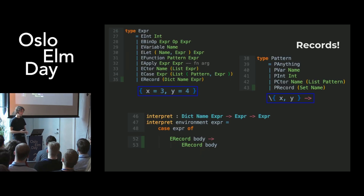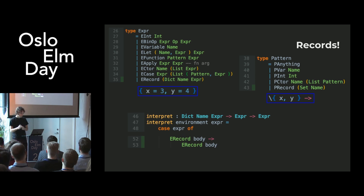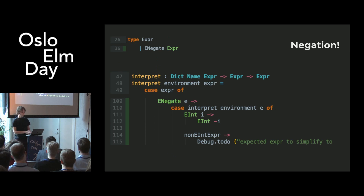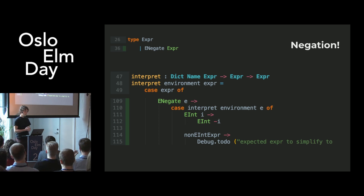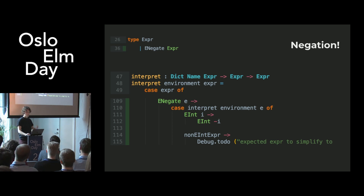Next up: records. They also live mostly in the type system. At runtime, the representation I'm using is just a dictionary from field name to expression. The pattern matching is just a set of field names, and the implementation is pretty much the same as for custom types. Finally, we have negation — like if you ever want to write `-x` in your code. The implementation is: simplify the expression, it should be an integer, and then invert it. Just do what it says.